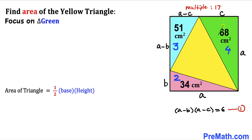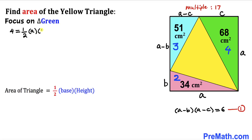Now let's focus on the green triangle, whose area is 4 and whose side lengths are a and c. Using the area formula: 4 = ½ × a × c. Multiplying both sides by 2 gives a × c = 8. Dividing both sides by a, we get c = 8/a. Let's call this Equation 2.